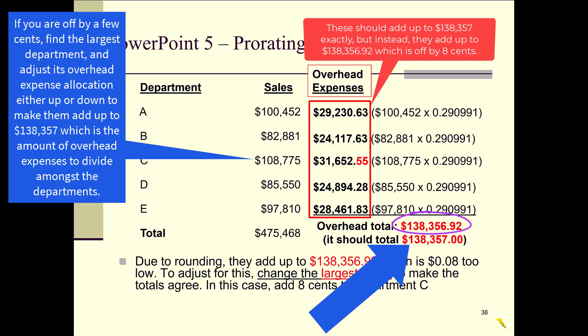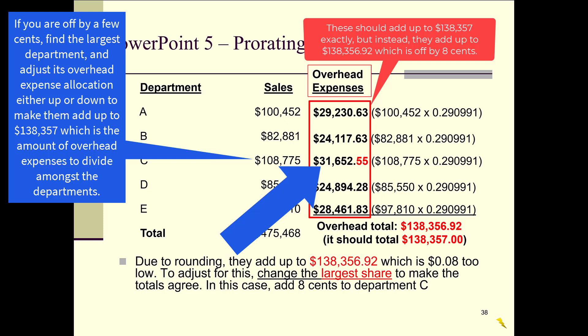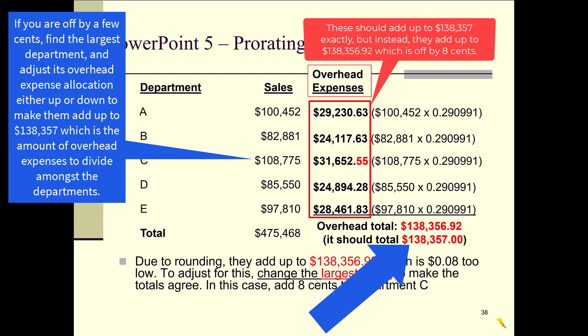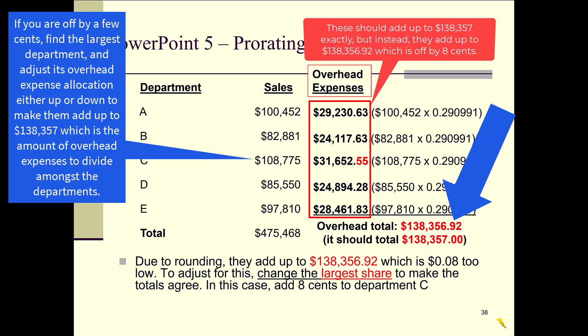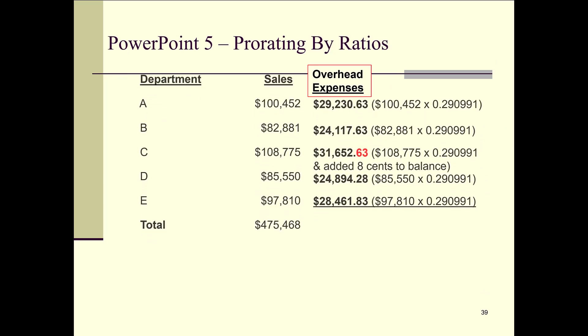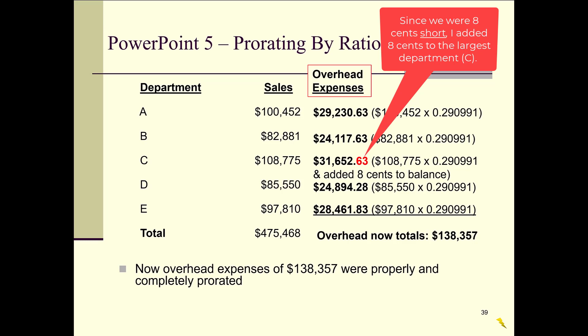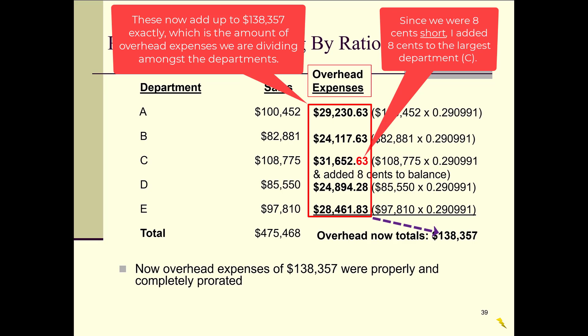When the overhead expenses do not equal exactly $138,357, the rule is: find the department with the largest amount of sales, which is department C, and adjust its overhead expenses — currently $31,652.55 — up or down just enough so that when you re-add them they equal $138,357. Since we're eight cents short, we add eight cents to department C, so instead of ending in .55 it now ends in .63. Now the overhead expenses add up to exactly $138,357.